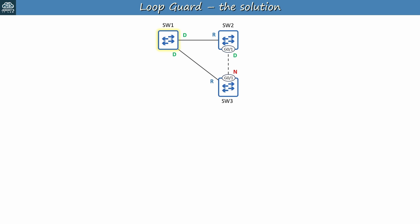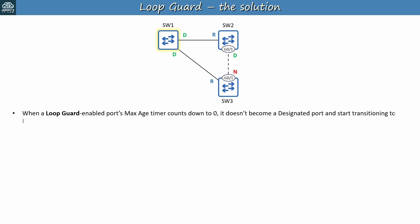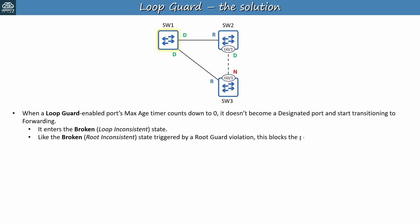Loop Guard doesn't prevent physical unidirectional links, but provides a mechanism to detect unidirectional links and then prevent Layer 2 loops. When a Loop Guard enabled port's max age timer counts down to zero, it doesn't become a designated port and start transitioning to the forwarding state. Instead, it enters the broken loop inconsistent state. Like the broken root inconsistent state triggered by a Root Guard violation, this blocks the port. Note that in both cases — whether it's Root Guard or Loop Guard — the port remains up-up, so the port isn't actually shut down; it's just that STP blocks it.